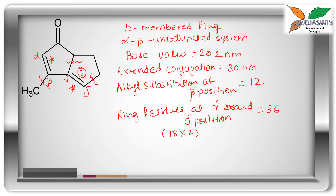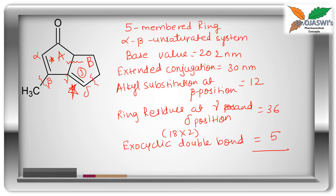Is this bond exocyclic to any ring? Yes. This bond is exocyclic to ring A. So for this exocyclic double bond we add 5 units. The total comes out to be 285 nanometers — this is the theoretical, or calculated, lambda max for this particular structure.